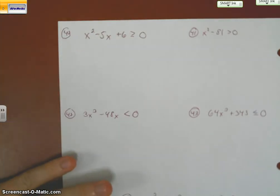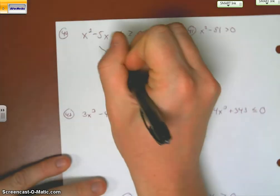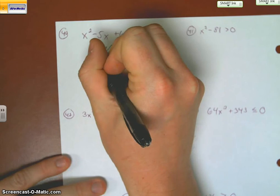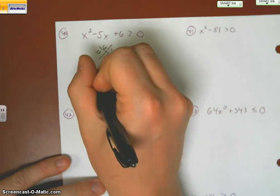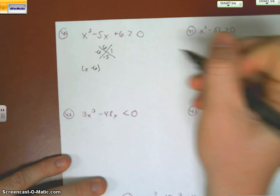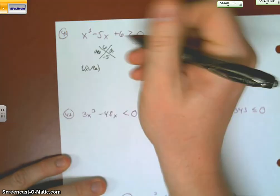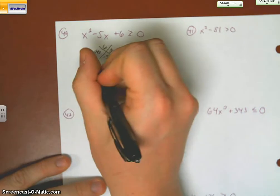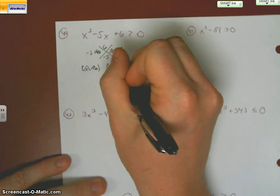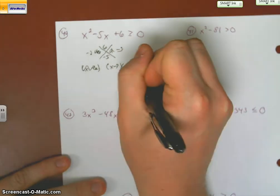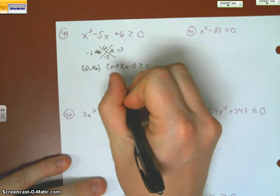Number 40. Rate of factor like normal. So we have 6 and negative 5. So I end up with negative 6 and 1. Oh, heck no. I lied. Negative 2 and negative 3. Nothing better than live TV here, guys. Okay. So we have roots of 2 and 3.